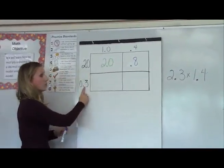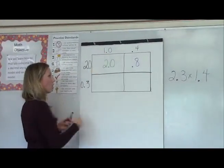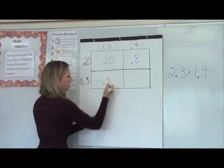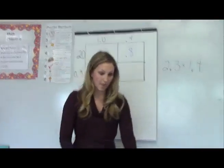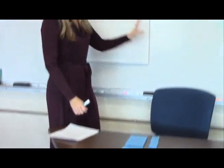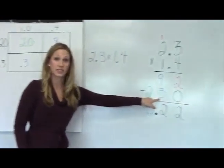I'm going to then multiply three tenths by one whole, which equals three tenths. When I look back at my model, you can see that I have the three tenths represented below. In the standard algorithm, there's that three tenths again.